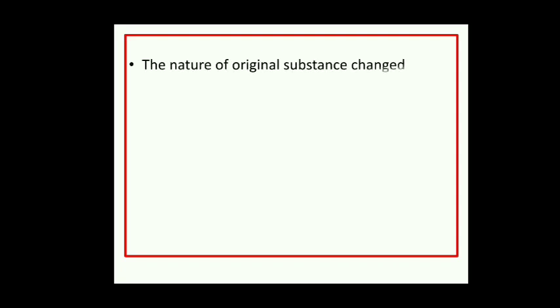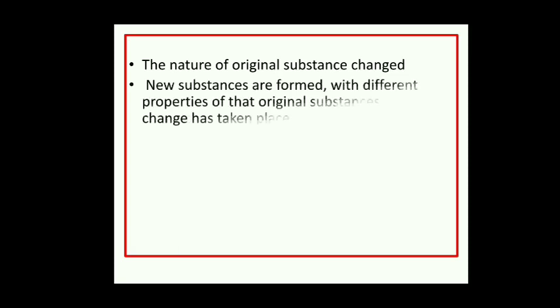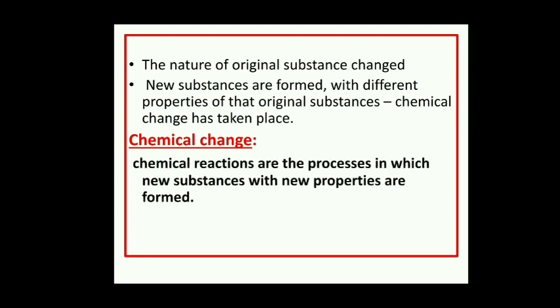In all the above cases, the nature of the original substance is changed, and new substances are formed with different properties. That's why chemical change has taken place. So, what is a chemical change? Chemical reactions are the processes in which new substances with new properties are formed. If new substances with new properties are formed in a process, such a process is called a chemical reaction.